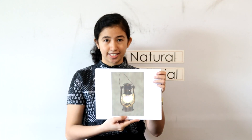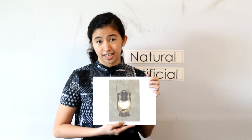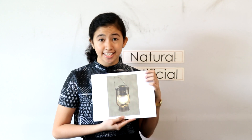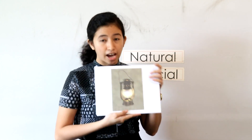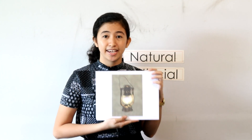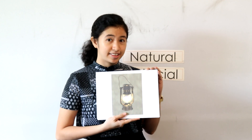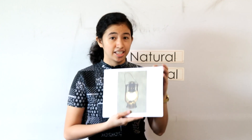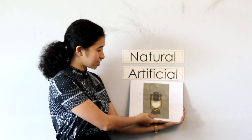Have you seen this kind of thing? This is an old lamp. An old lamp is made by man. Therefore, it gives us an artificial light.